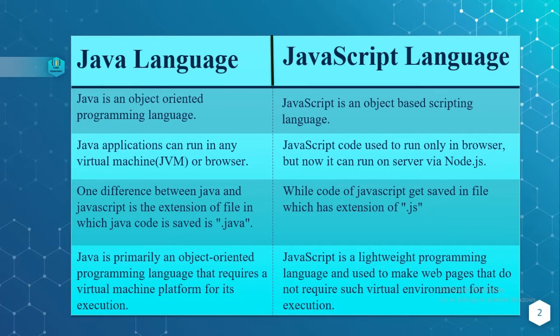The first difference is: Java is an object-oriented programming language whereas JavaScript is an object-based scripting language. Java applications can run in any virtual machine platform, that is JVM or browser, whereas JavaScript code is used to run only in the browser, but now it can also run on the server side via Node.js.